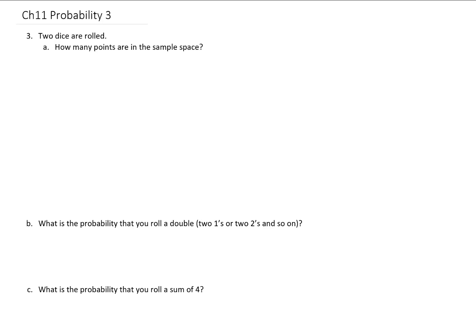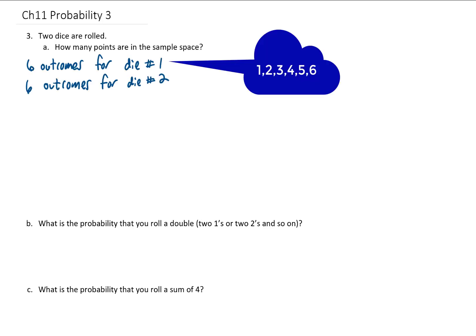Two dice are rolled. How many points are in the sample space? Well, we have six outcomes for die number one. We have six outcomes for die number two.